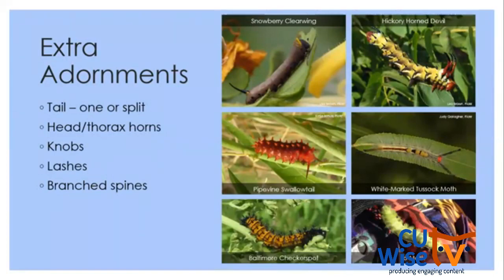My favorite place to start identifying a caterpillar is to look for extra adornments or features. Caterpillars can have tails — often also referred to as horns — which can be different colors. They can be a single tail, a split tail, facing the head, or facing the rear. Looking at the specific tail characteristics can get quite in depth.